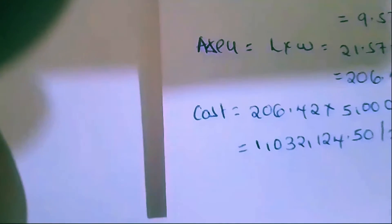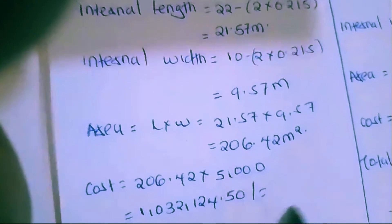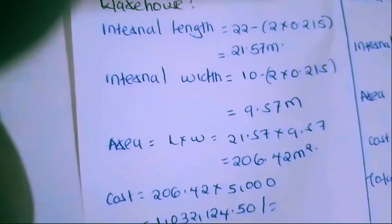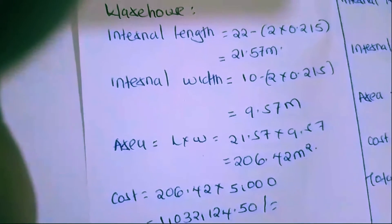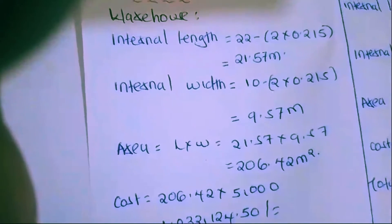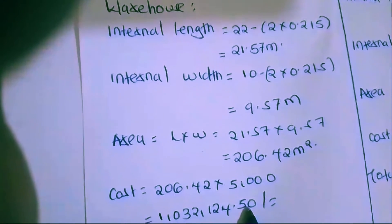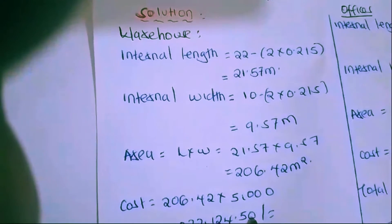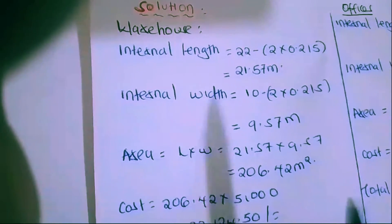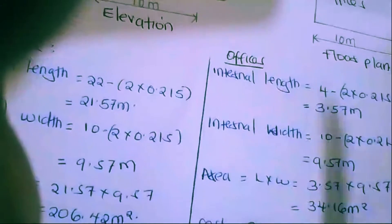Now that we have the total square meters we can find the total cost of the warehouse. The area is 206.42 square meters, multiplied by the cost per square meter of 5,000, giving us one million, thirty-two thousand, one hundred and twenty-four shillings and fifty cents. That is the cost for the warehouse.